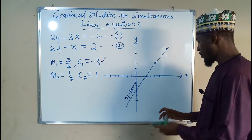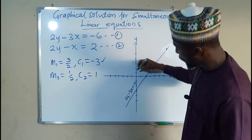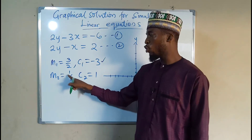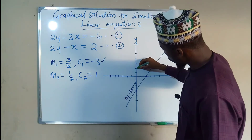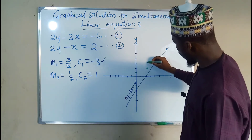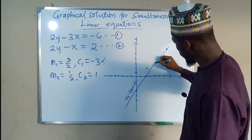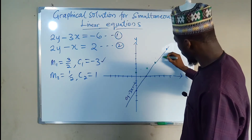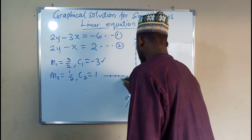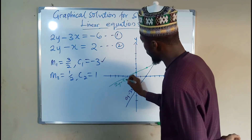Then let us plot the other one — the second graph. The y-intercept is positive 1, so we locate that on the y-axis. Our slope is 1 over 2, meaning we go up 1 and to the right 2. We repeat this: up 1, right 2; up 1, right 2; up 1, right 2. These points are enough for us to construct this graph. It is not that accurate, but this is the graph of the second equation, which is 2y minus x equals 2.